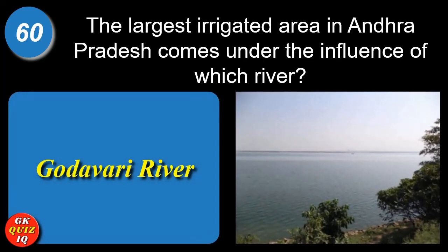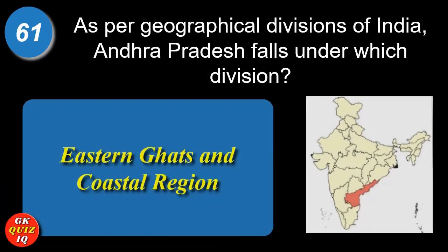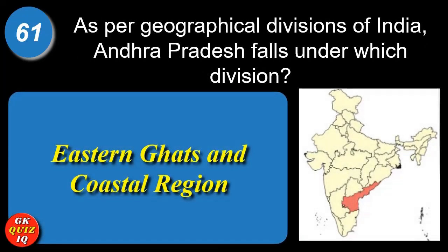The largest irrigated area in Andhra Pradesh comes under the influence of which river? Godavari River. As per geographical divisions of India, Andhra Pradesh falls under which division? Eastern Ghats and coastal region.